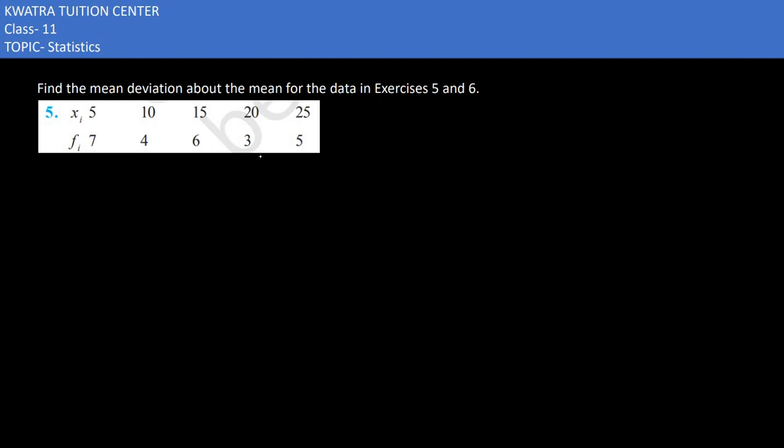So here in the fifth one, it says to find the mean deviation about the mean again. So we have to find mean deviation first. But how do we have data? x_i and f_i. So in this case, our table will enhance.